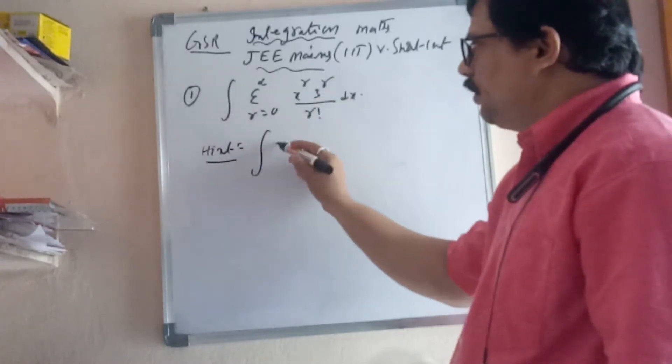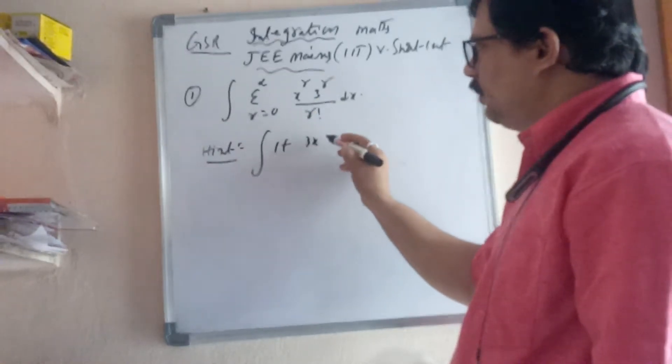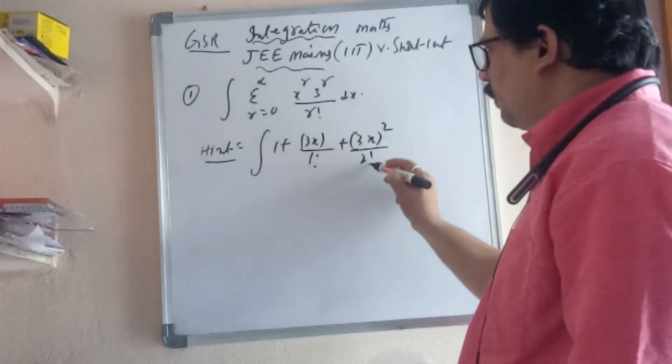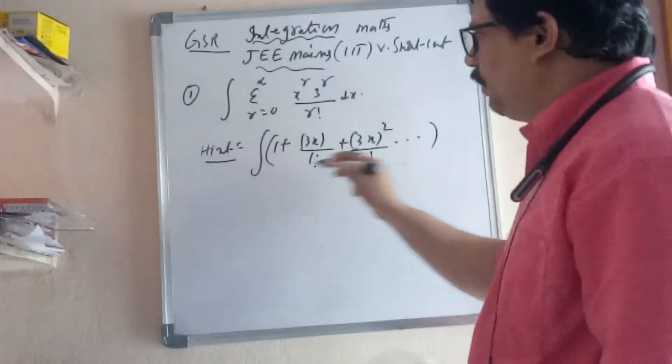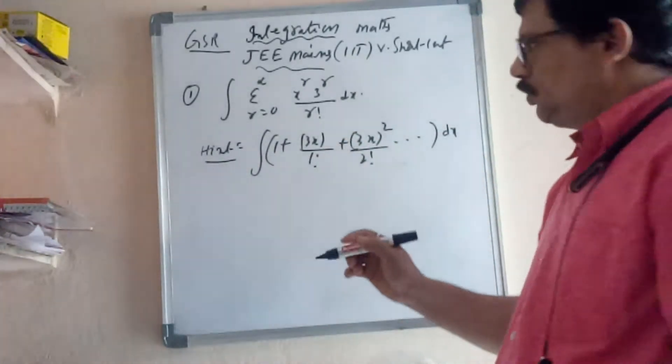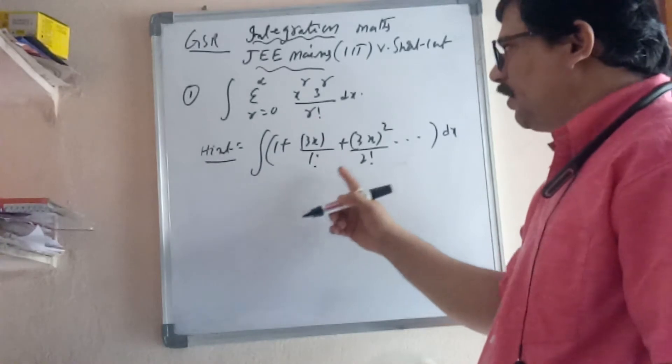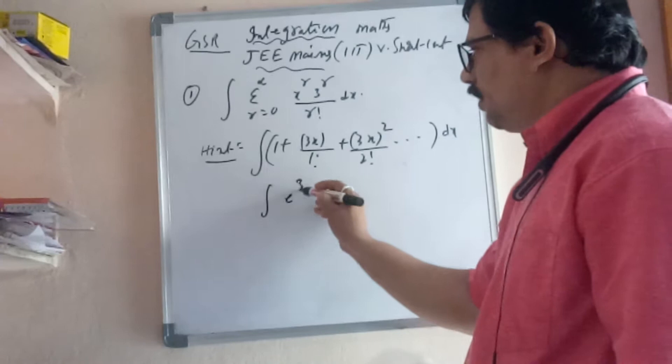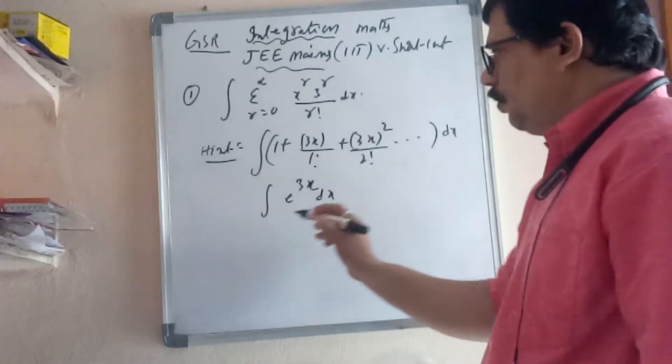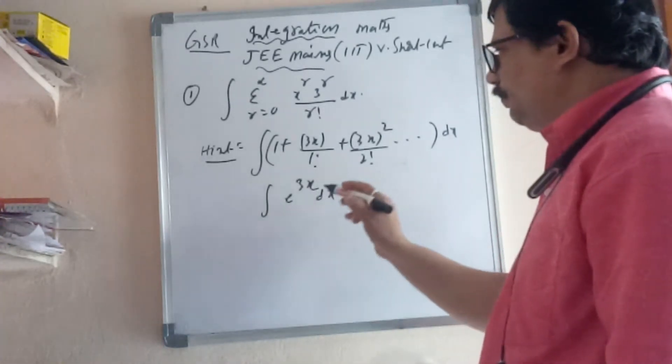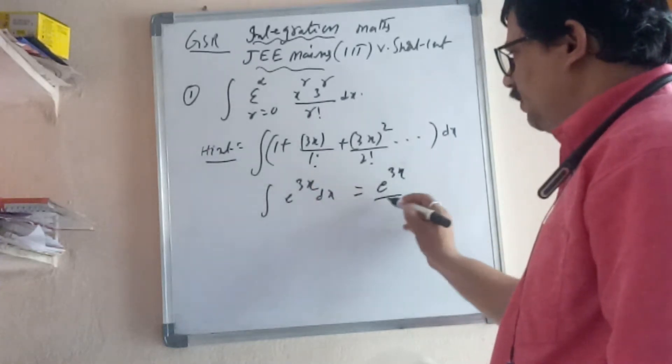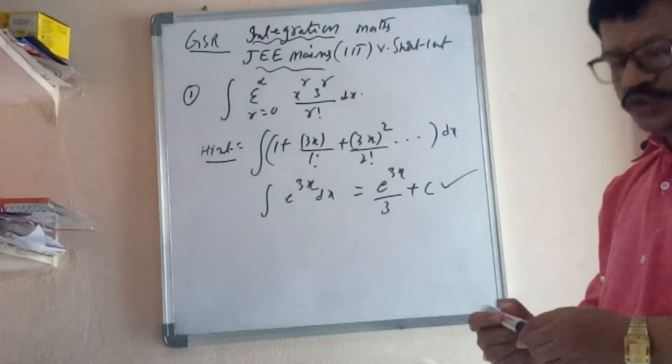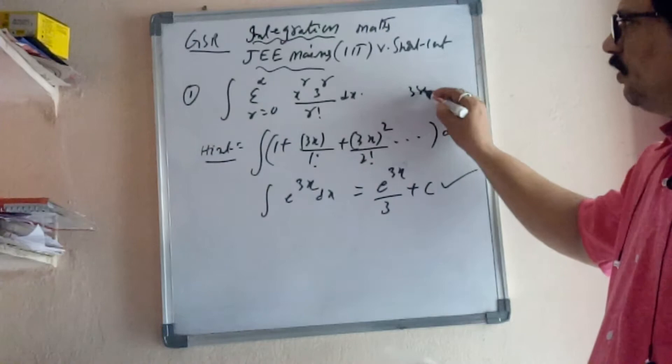The integral substitutes as: integral of (1 + 3x/1! + 3x²/2! + ... going up to infinity) dx. This equals e^(3x) dx. Shortcut: this is actually e^(3x)/3 + C. Only two steps within seconds.